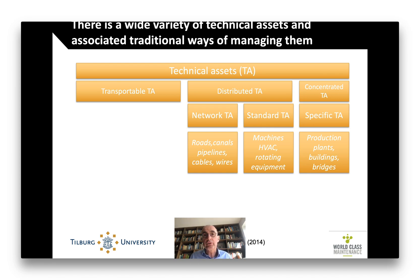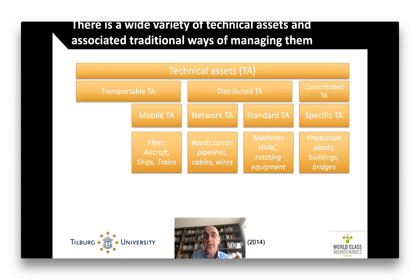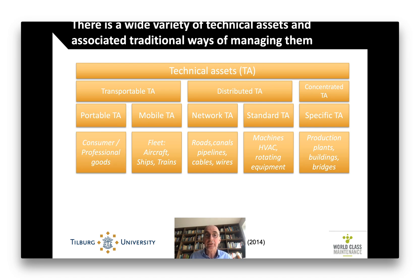There are also assets that are really meant to be transportable. Things like fleet — aircraft, ships, trains, and of course cars — those are meant to be transported; they are indeed transportation devices. Another kind of transportable technical assets are the portable technical assets, especially those that we as consumers use, but also the professional sector — like a laptop, your smartphone, or anything that's really meant to be portable.